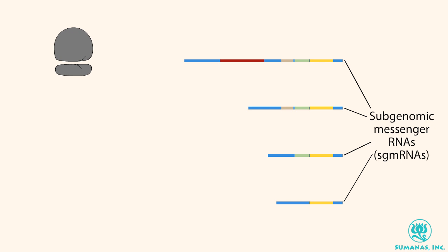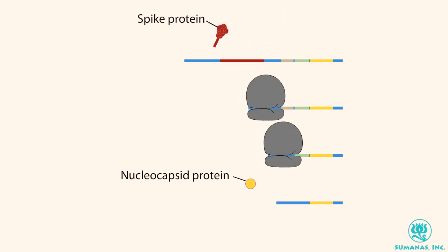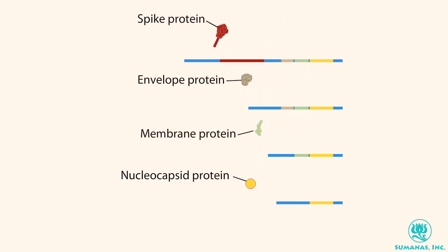The sgmRNAs can now be translated by host ribosomes into viral proteins, including the nucleocapsid protein, the spike protein, and two other viral proteins found in the viral envelope.